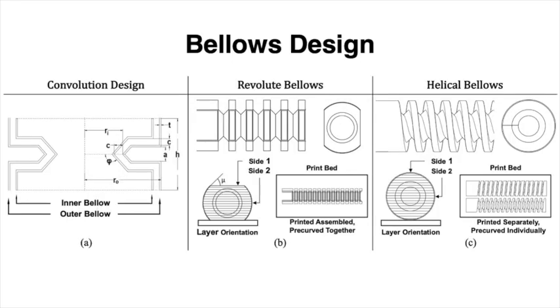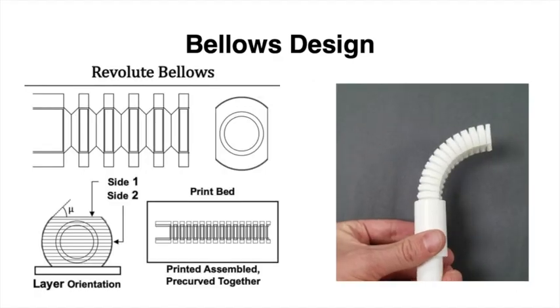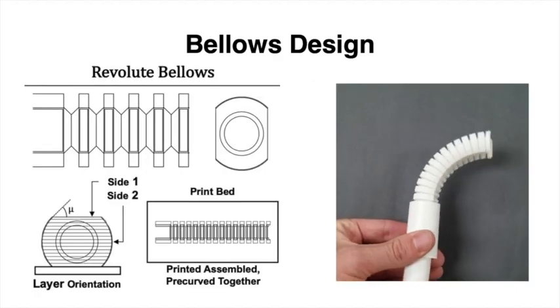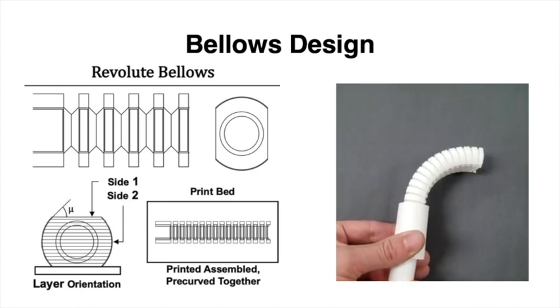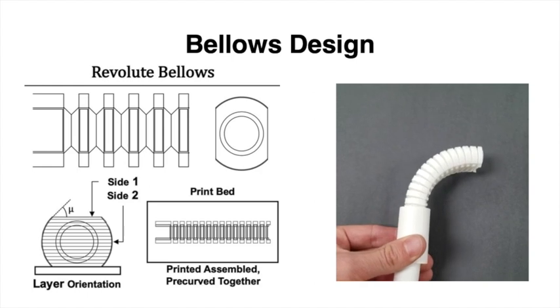As shown in figure A, a typical bellows design consists of a convolution geometry that is revolved around a central axis to form a revolute bellows, as shown in figure B. Revolving inner and outer convolution geometry about a central axis results in a concentric pair of revolute bellows that cannot be assembled or disassembled because they are interlocked.